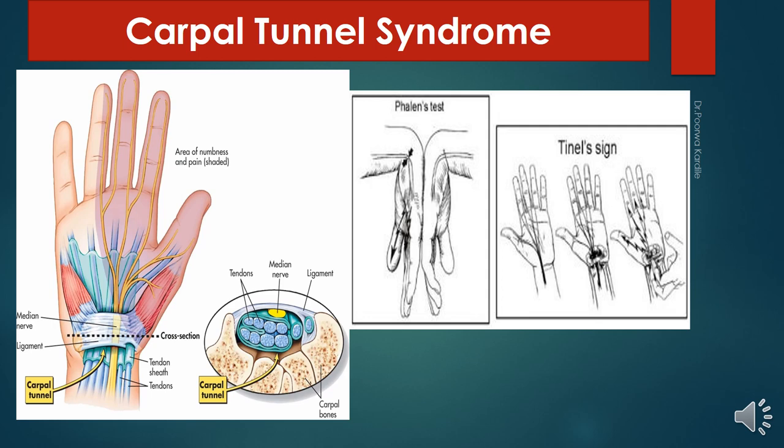Important signs in carpal tunnel syndrome: the Tinel's sign is positive when symptoms are reproduced with percussion over the palmar aspect of the wrist distal to the skin crease. Phalen's sign is positive when symptoms are reproduced by asking the patient to flex both wrists against each other for one minute.